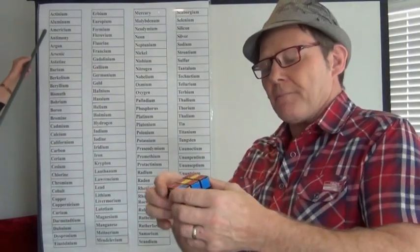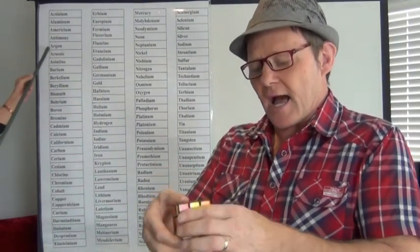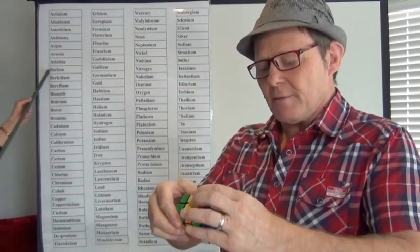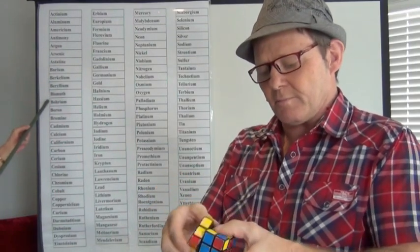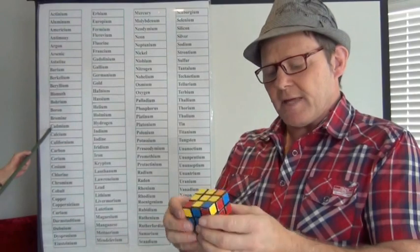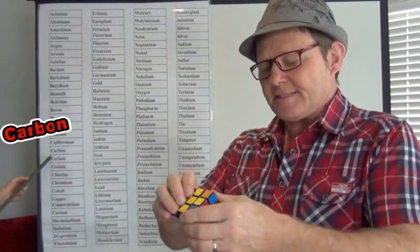Actinium, Aluminum, Americium, Antimony, Argon, Arsenic, Astatine, Barium, Berkelium, Beryllium, Bismuth, Beryllium, Boron, Bromine, Cadmium, Calcium, Californium, Carbon, Cerium, Cesium.